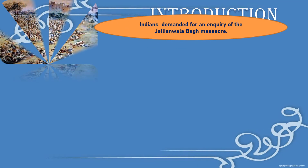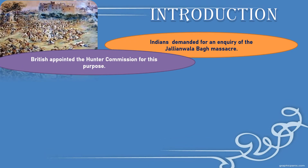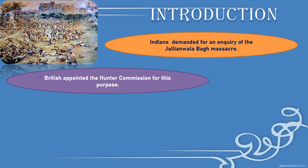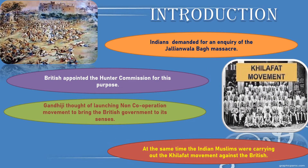In our previous module, we learnt that Indians demanded an inquiry into the Jallianwala Bagh Massacre, for which the British appointed the Hunter Commission. But sadly, the Hunter Commission did not fulfil the purpose. So, Gandhiji thought of launching the Non-Cooperation Movement to bring the British government to its senses. At the same time, the Indian Muslims were carrying out the Khilafat Movement against the British. Let's understand what the Khilafat Movement was and why it was carried out.